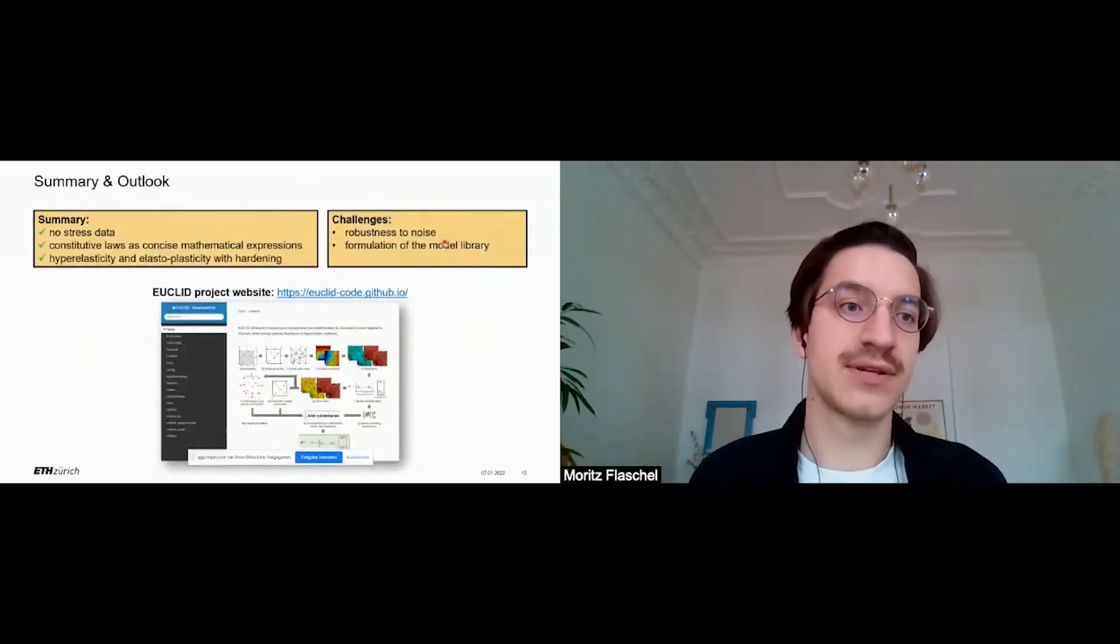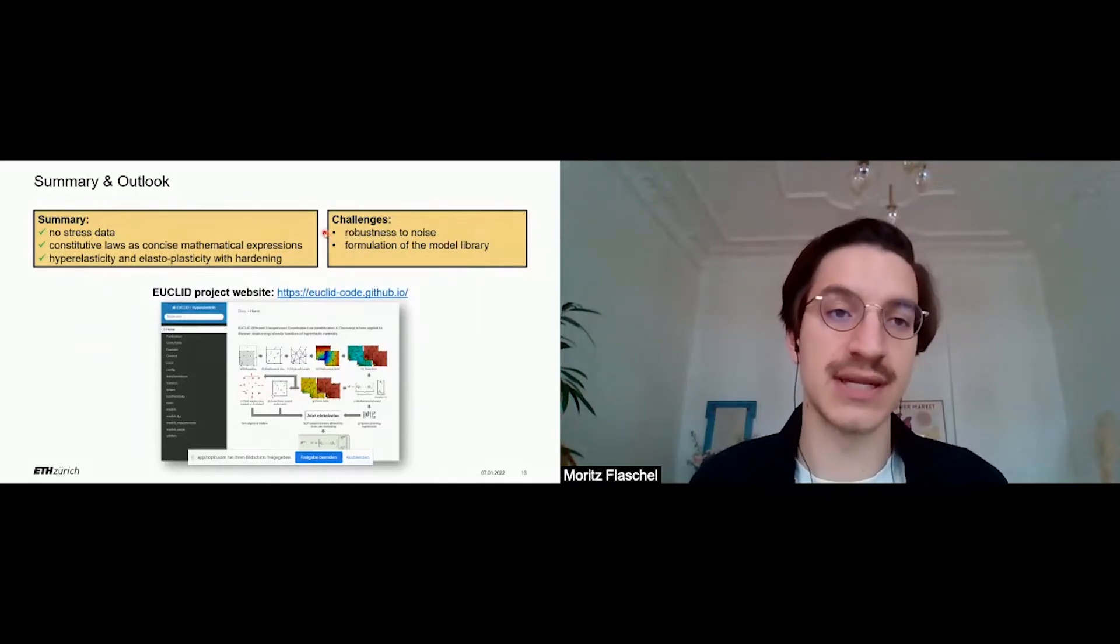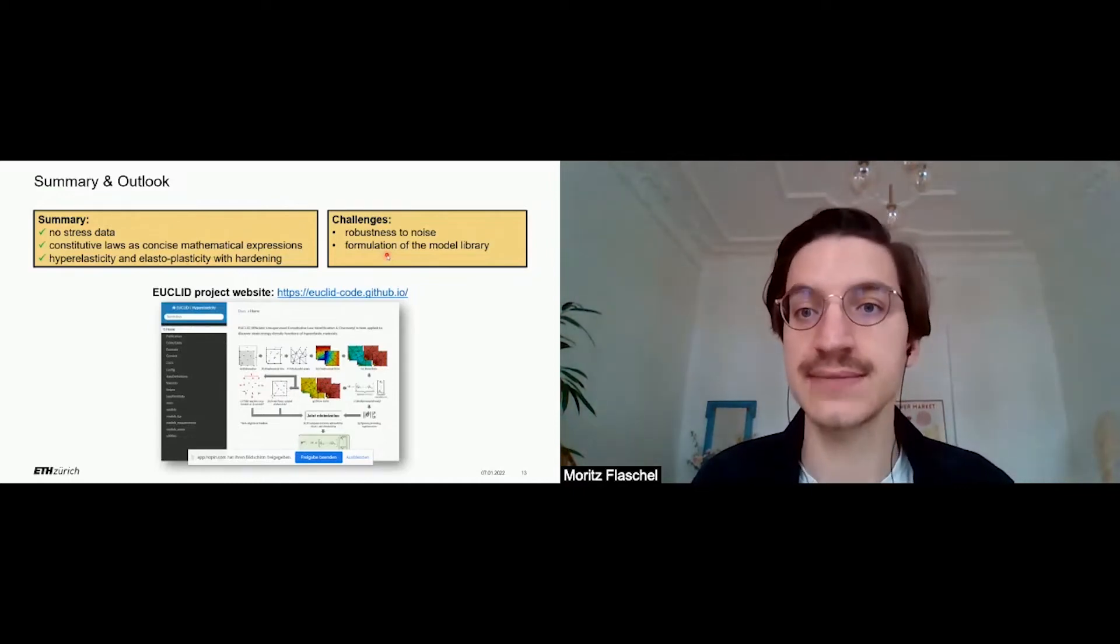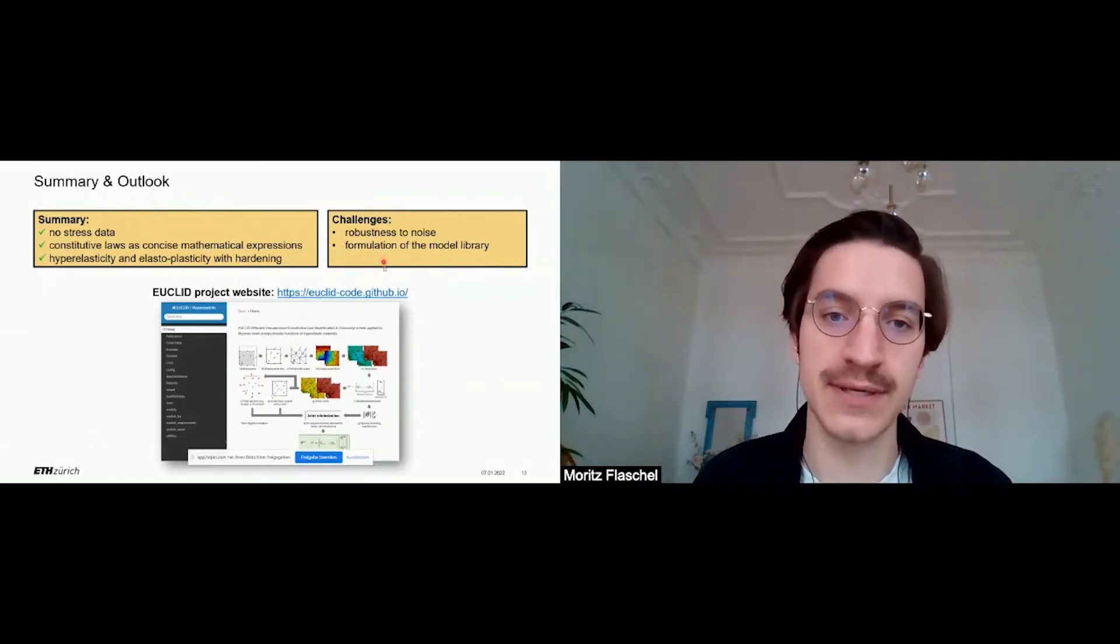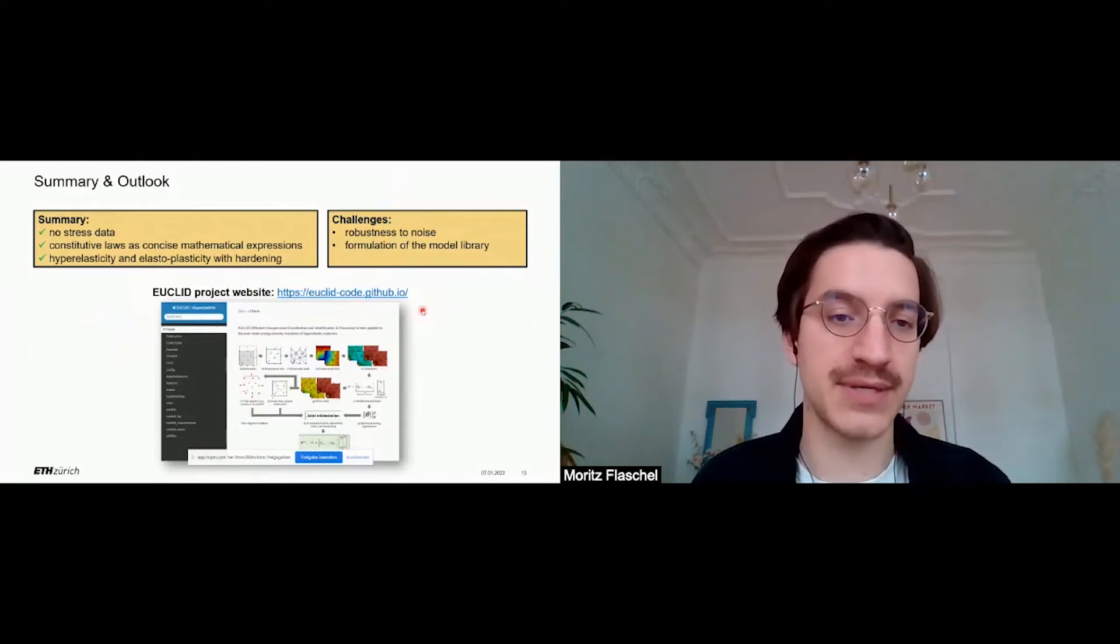Finally, I would like to summarize. EUCLID does not use any stress data, which is an advantage as this is typically not available from experiments. It finds constitutive laws as concise mathematical expressions. We have applied it so far to cases of hyperelasticity and elastic plasticity. In the future, we would like to work on the robustness to noise, such that it can be also used in experimental settings. And we would like to generalize the formulation of the model library, such that more different material behaviors are included. If you are interested, we are uploading all our codes and data to our project website. With this, I'm at the end of the presentation and I would be happy to answer any questions.